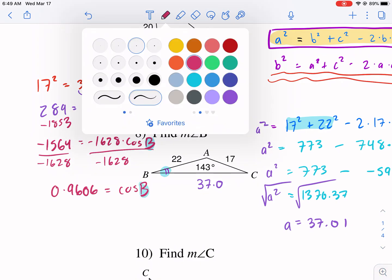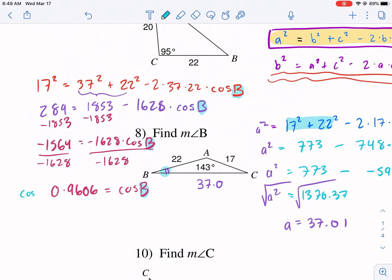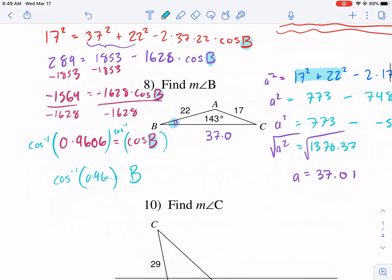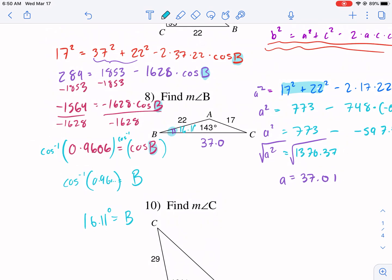Well, how do I get B by itself? If I'm going to get B by itself, what I have to do is I have to take the inverse cosine of both sides. So B is going to be equal to the inverse cosine of 0.96 dot dot dot. I'm just going to type that in my calculator. I don't like rounding if possible. Inverse cosine, type that in, enter. And this will give me angle B is equal to 16.11 degrees. So I got angle B is 16.11 degrees. That's very cool. I got that answer.